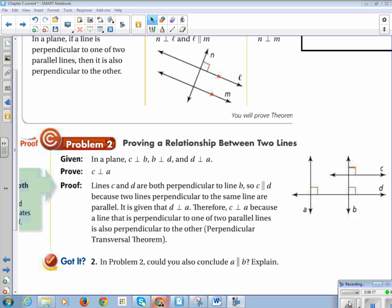All right. So let's look at our example, problem number two. In a plane, C is perpendicular to B, B is perpendicular to D, and D is perpendicular to A. They've shown all these given items by putting the perpendicular mark on our diagram, which is what I would expect you guys to do in the same situation. Number one, make a diagram. And number two, put the perpendicular marks. Anytime they give you information, make sure that given information is on your diagram.